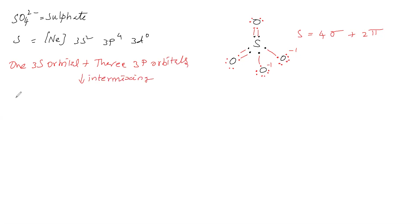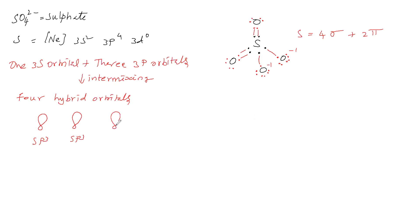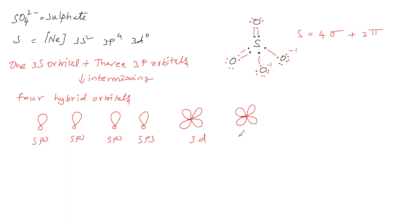Intermixing produces 4 sp³ hybrid orbitals. For forming 2 pi bonds, sulfur must provide 2 pure orbitals from 3d (since all 3p orbitals have gone for hybridization). Two 3d orbitals are provided for pi bonding. All 6 valence electrons go for bonding — one electron to each of the 4 sp³ orbitals and one to each of the 2 3d orbitals; there is no lone pair.